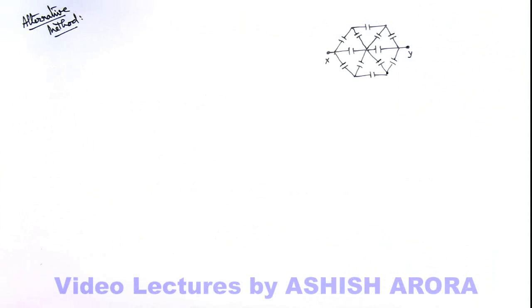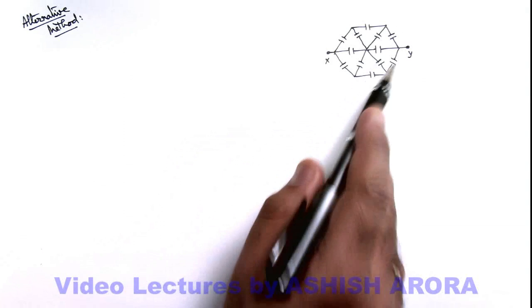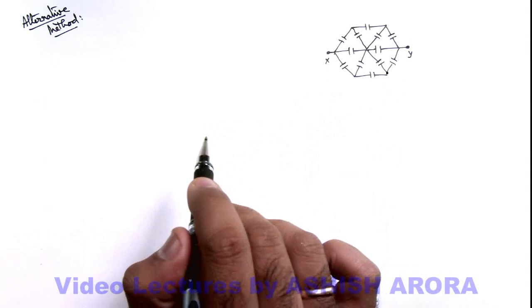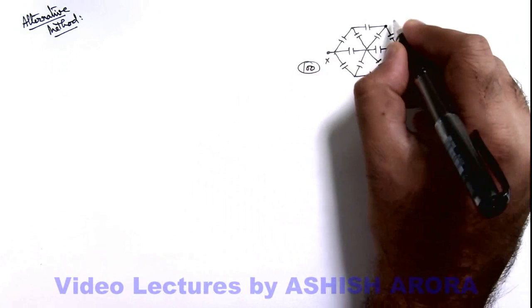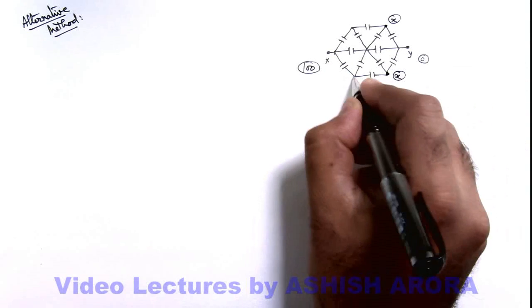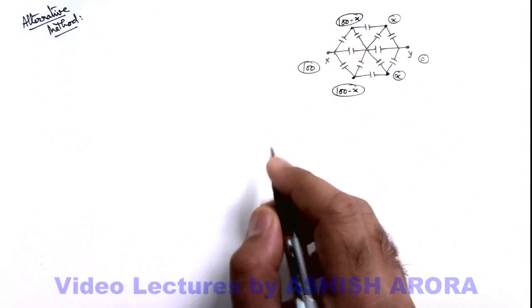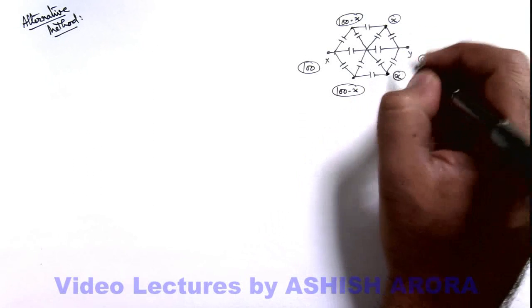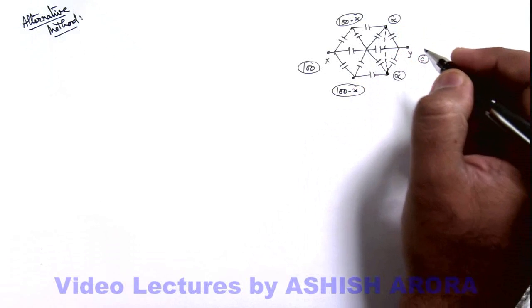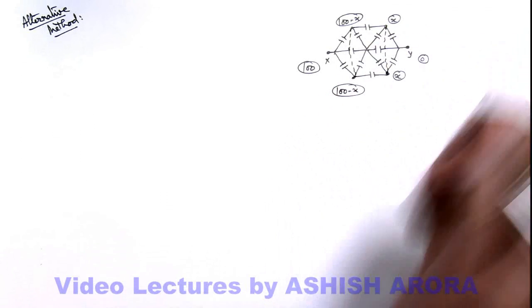Let us also analyze an alternative method to solve the same problem of equivalent capacitance of the symmetry circuit. We apply a battery across the terminals with potentials zero and 100. By symmetry, we distribute potentials X and X at two nodes, and 100 minus X at the other two nodes. If these two points are at the same potential, connecting them with a straight conducting wire should not cause any charge flow between them. Similarly for the other pair of equal-potential points.